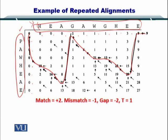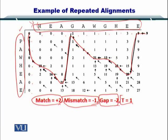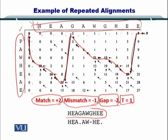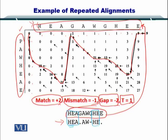We need to understand how to perform this traceback. Before we go to the traceback, remember that we used a match award of +2, a mismatch penalty of -1, a gap penalty of -2, and t equals 1. The alignment result looks like this: here is the sequence on top, and below you can see the alignment found here, and then the same alignment found again later in the sequence.